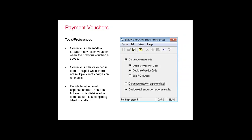Once you post a payment voucher and you've forgotten to expense it out to a client, your options are to void the voucher and redo it with the expense distribution, or go in and put the expense entry in by itself. But those two items are no longer tied, so you can't track that as far as reporting goes — which client did I bill for this, et cetera. So 'Distribute Full Amount' basically forces you to stop and think and put in the accurate amount.